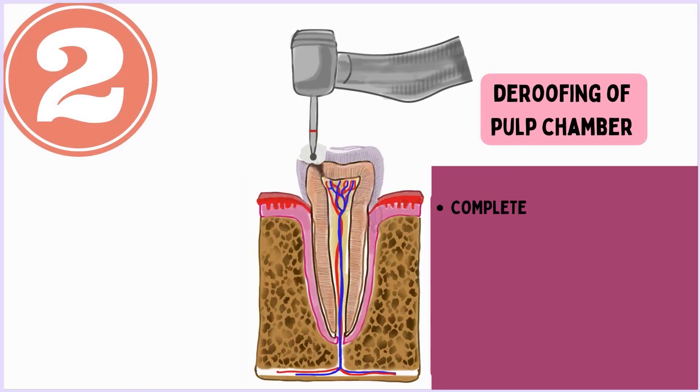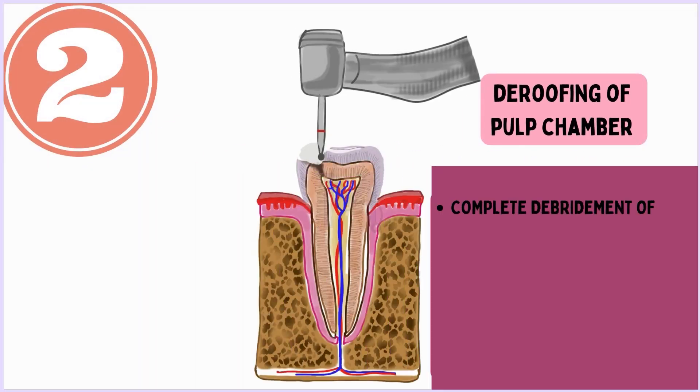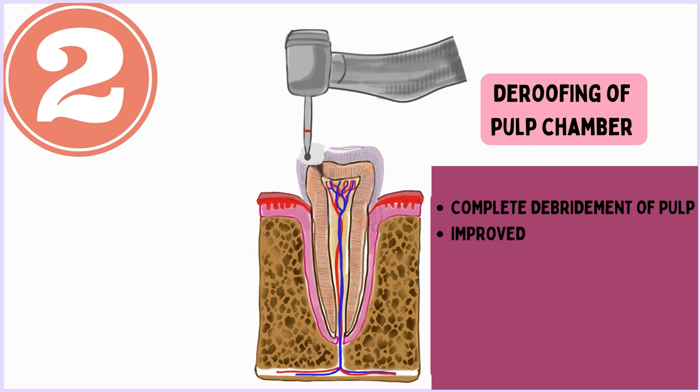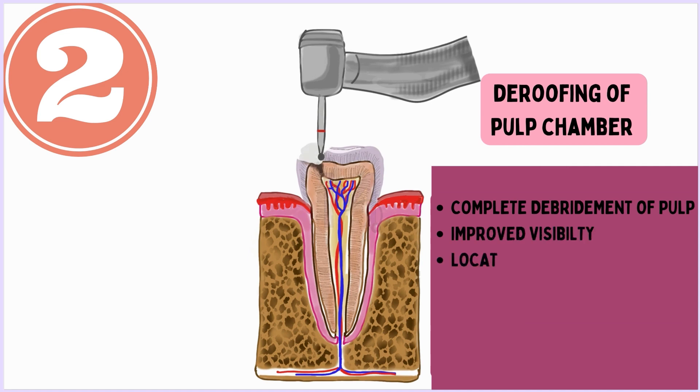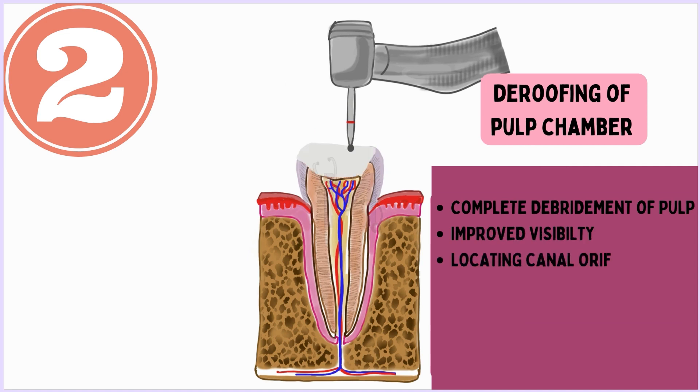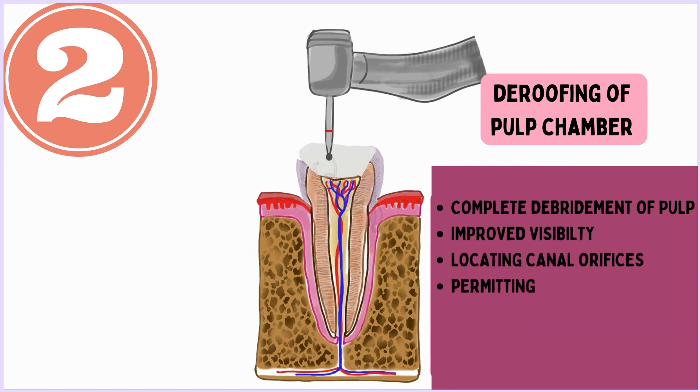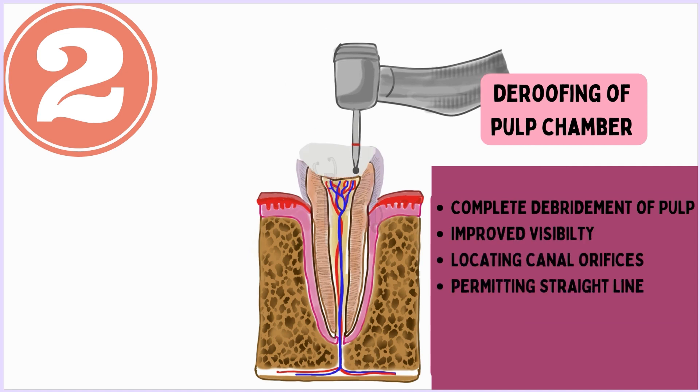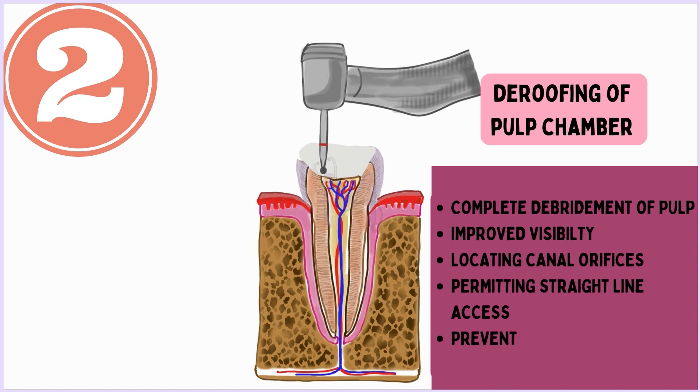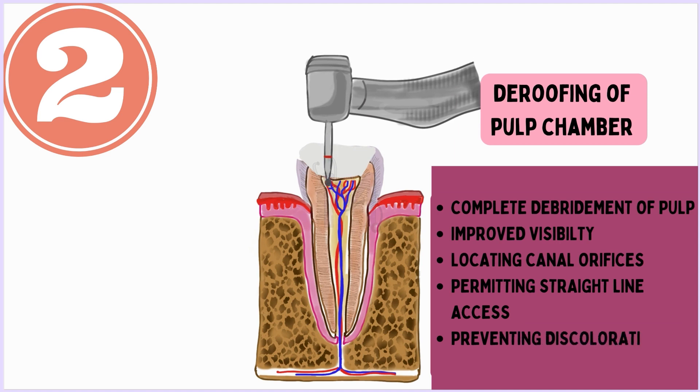The second objective is complete de-roofing of the pulp chamber. This will help in complete debridement of the pulp, improved visibility, locating the canal orifice, permitting straight-line access, and preventing discoloration of teeth.